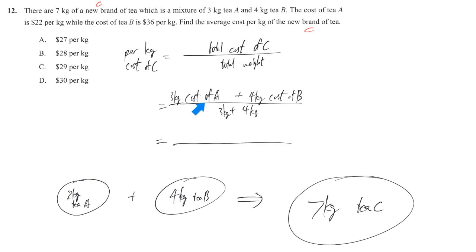Each kg of A costs $22, so 3 kg means 22 times 3. Similarly, the cost of B is $36, and we have 4 kg of them, divided by 7. That's how you get the total cost. Using a calculator, we know that it's $30 per kg.